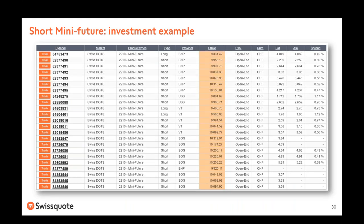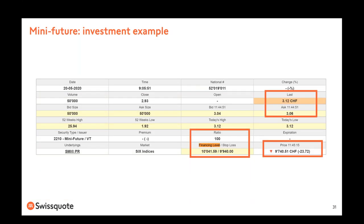This is the data table — or mini future chain — where you can select the strike price. Remember, the strike price for a mini future is the financing level. You can see the financing level, which is different from the stop loss and changes day by day. Then you have the same information as before: the underlying name on the left, the underlying price on the right, and product information including the year high, year low, day high, day low, last price, bid, and ask. The ask price of 3.06 is the price at which you would buy at market.